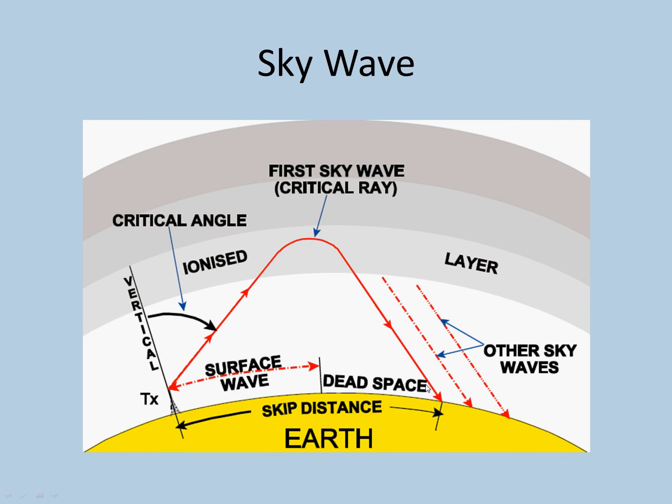This is the skip distance, the distance between the transmitter and the first point on earth where the wave has returned. This diagram talks about something called dead space. From the point where the surface wave is totally attenuated—this is the surface wave; if there is a transmitter, there is going to be a surface wave. Wherever sky waves occur in lower frequencies (LF, MF, and HF frequency bands), there will be some surface waves present. That wave is going to travel to some distance, and beyond that distance to this point where the first wave is returned, there is something called dead space. There will be no detectable signal in the dead space. So this is important about the definitions of surface wave, dead space, and skip distance.